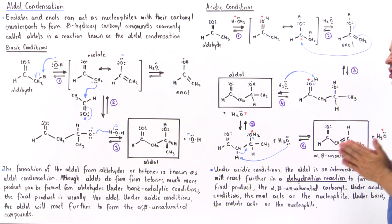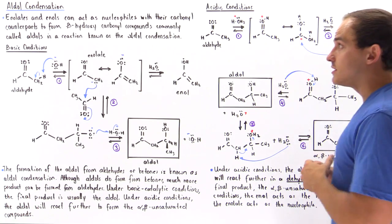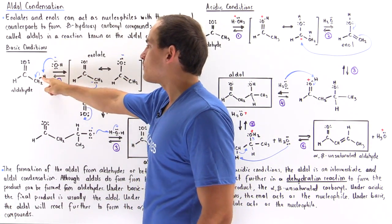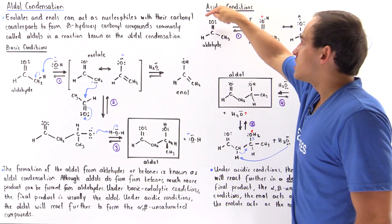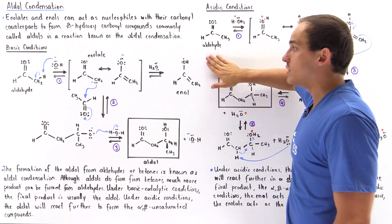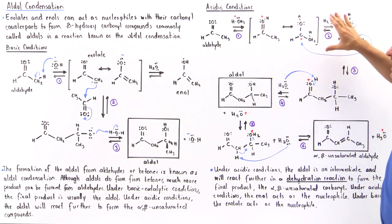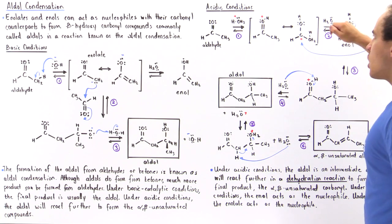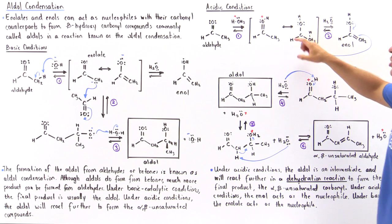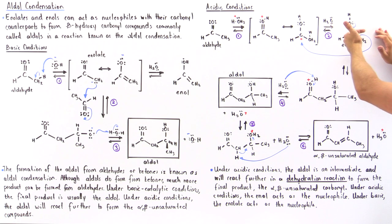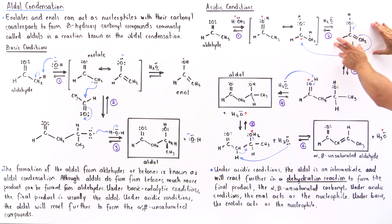However, if we switch to acidic conditions, things get a bit more complicated. In step one of the acidic mechanism, instead of having the hydroxide grab the H from the alpha-carbon, we have the hydronium that protonates the oxygen of the carbonyl of this aldehyde — though we could also use a ketone. In step one we form the protonated aldehyde intermediate, where we have a positive charge that can also delocalize onto the alpha-carbon. In step two, the water molecule formed in step one deprotonates the H atom attached to our alpha-carbon, and we form our enol.